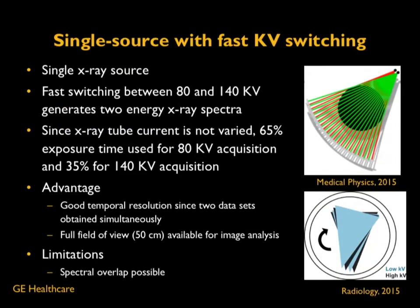The first method is single source with fast kV switching. GE Healthcare has chosen this path, using an existing multi-detector CT scanner such as a 64 or wide-detector CT. The source is a single x-ray tube; however, dual energy is achieved by fast switching of the tube voltage. Rapidly switching between 80 and 140 kV generates two energy x-ray spectra, as shown in this drawing.